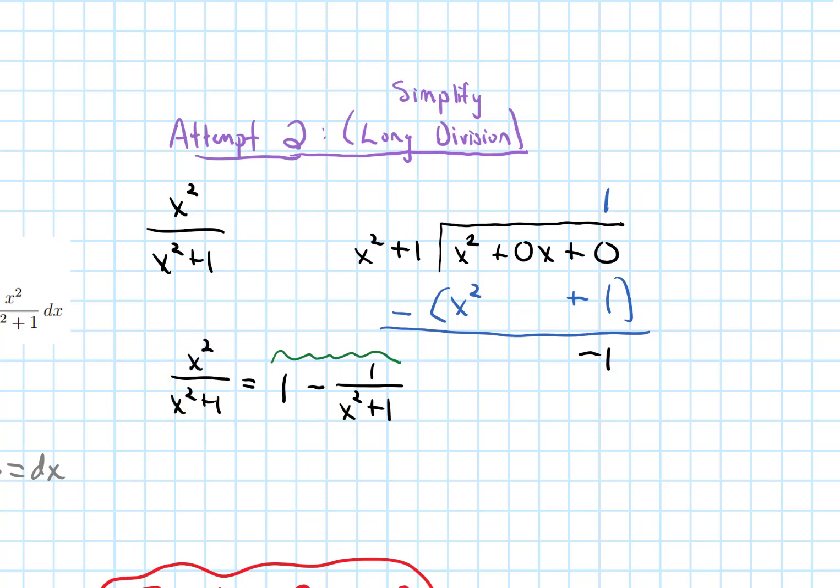But this is nice because now when I do this antiderivative, we're just doing the antiderivative of one minus one over x squared plus one dx. And I know how to do the antiderivative of one over x squared plus one. So the antiderivative of one, that's just x. And this fractional function, that's arc tan. So we get minus arc tan of x. And I got to put the plus c because this is an indefinite integral, which means general antiderivative. And that's my answer.